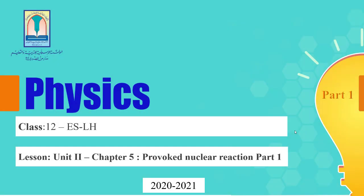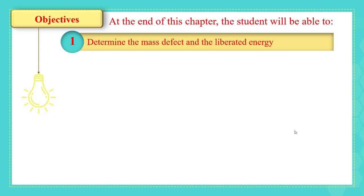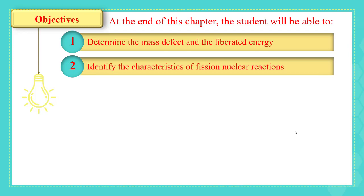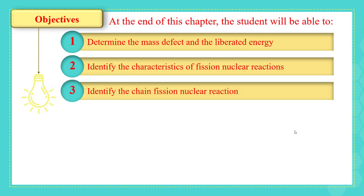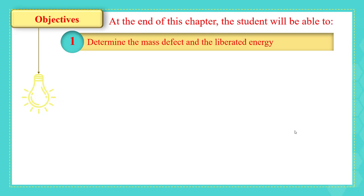Assalamu alaikum warahmatullahi wabarakatuh. In this video we discuss the first part of the last chapter in our curriculum. This chapter is titled 'Provoked Nuclear Reaction.' The objectives are: determine the mass defect of a nuclear reaction and the liberated energy, identify the characteristics of fusion nuclear reaction, discuss the chain nuclear reaction, and identify the characteristics of fusion nuclear reaction. In this video we explain the first objective.